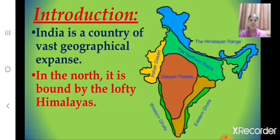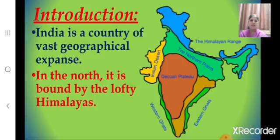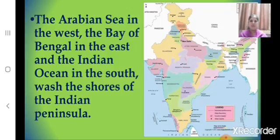India is a country of vast geographical expanse. In the north it is bound by the lofty Himalayas. If you have seen the map of India, you can see that India has a vast geographical expanse. Here you can see the Himalayan range. The Arabian Sea is in the west, the Bay of Bengal is in the east, and the Indian Ocean is in the south.